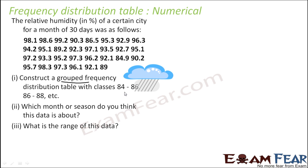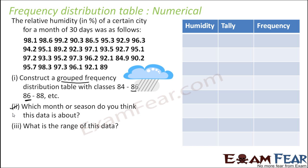The class 86 is common between intervals, so it is an overlapping class. The question asks which month or season this data is about and what is the range of the data. Let us create a grouped frequency distribution table as asked — they have given the class size also, starting from 84.